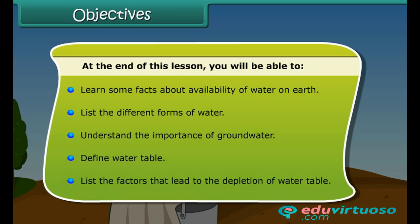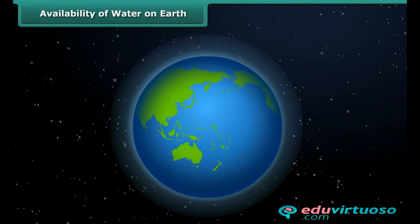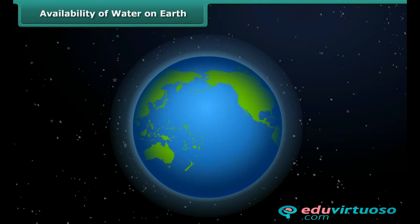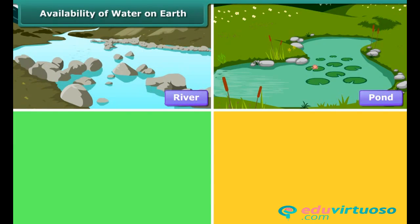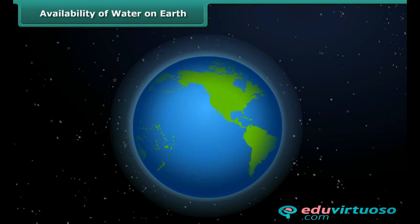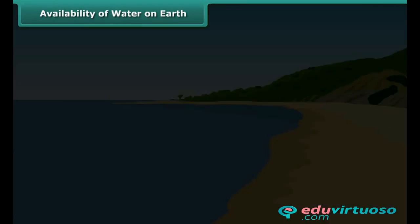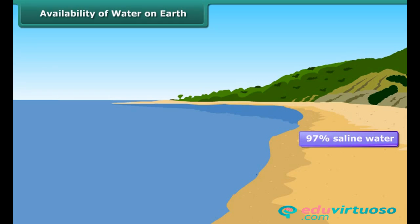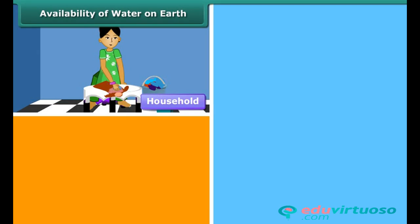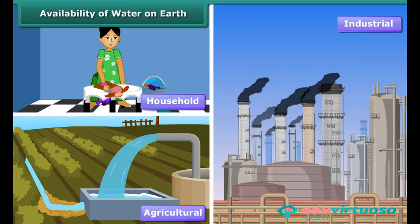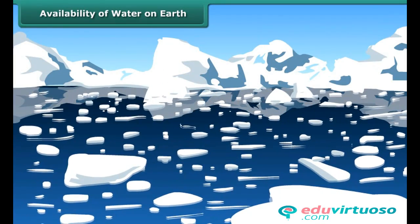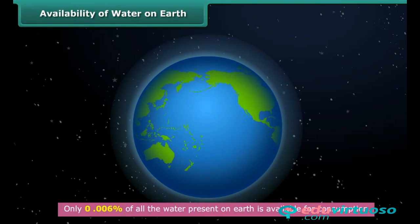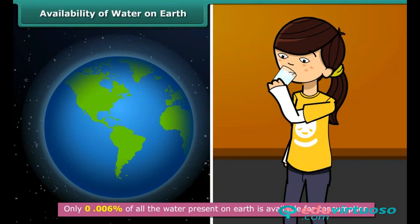Earth is called the blue planet. Water covers 71% of Earth's surface in the form of rivers, ponds, oceans, and streams, making it appear blue when seen from space. However, 97% of the total water on Earth's surface is saline water, fit neither for household consumption nor for agricultural and industrial use. The remaining 3% is freshwater, two-thirds of which is frozen in glaciers and polar ice caps. Only 0.006% of all the water on Earth is available for consumption.